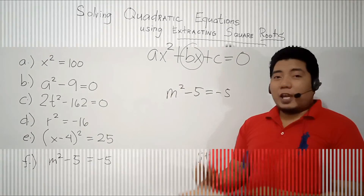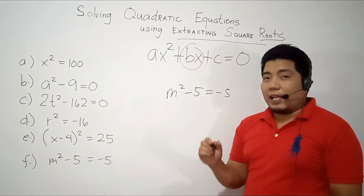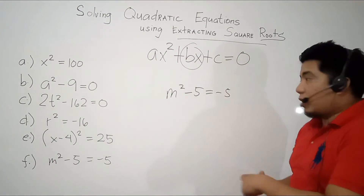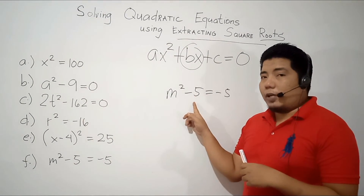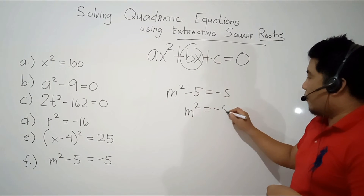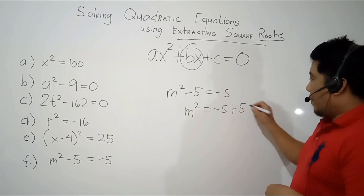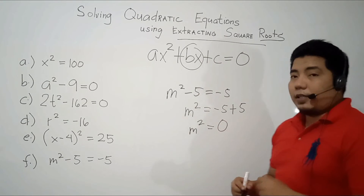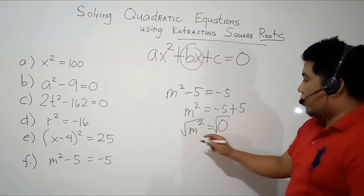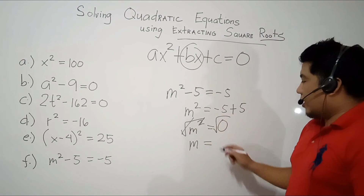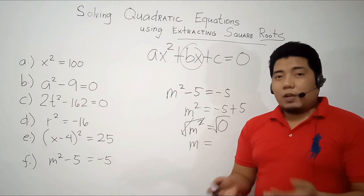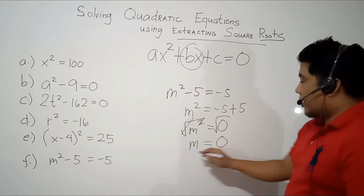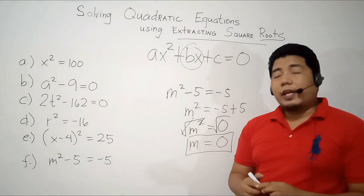For our final example, we have m² - 5 = -5. Same as before, we isolate the variable on the left side. We transpose the negative 5, which becomes positive 5 on the right. Negative 5 + 5 = 0, so we have m² = 0. If we square root both sides, they cancel, and m = the square root of 0. Since 0 is neither positive nor negative, the answer is just 0, because 0 × 0 = 0.